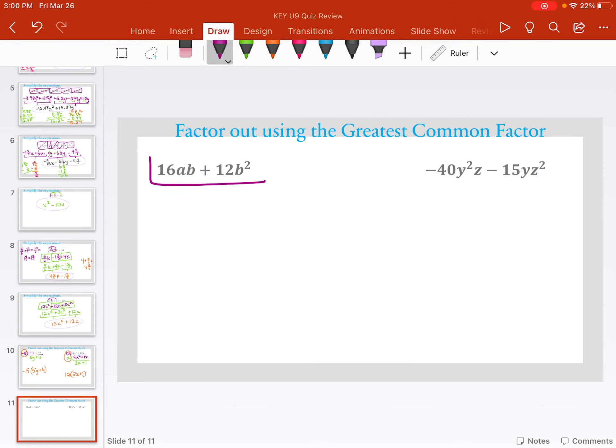Okay, 12 and 16. Let's see. They both have a 4 in common. So let's divide that out. 16 divided by 4 is 4ab plus 12 divided by 4 is 3b squared.